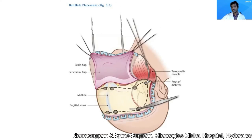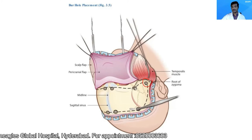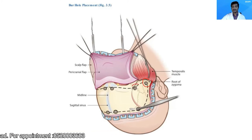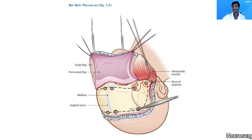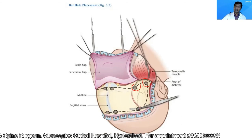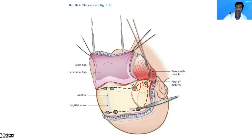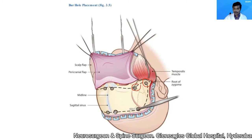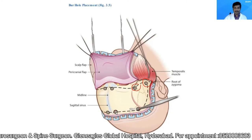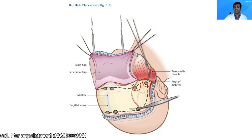For burr holes, the first is placed at the posterior root of the zygoma, the second is the key burr hole, and the third is placed just in front of the coronal suture over the superior temporal line. The two midline burr holes are placed as close to the midline as possible, straddling it. When placing the posterior burr holes, be very careful not to plunge into the dura, which could injure the superior sagittal sinus.